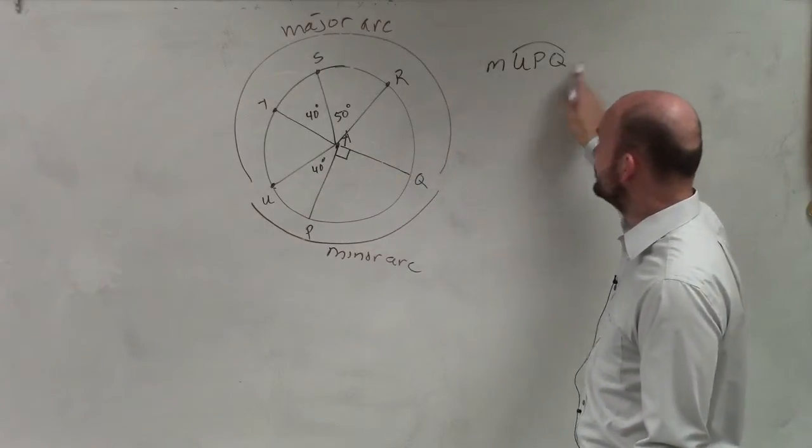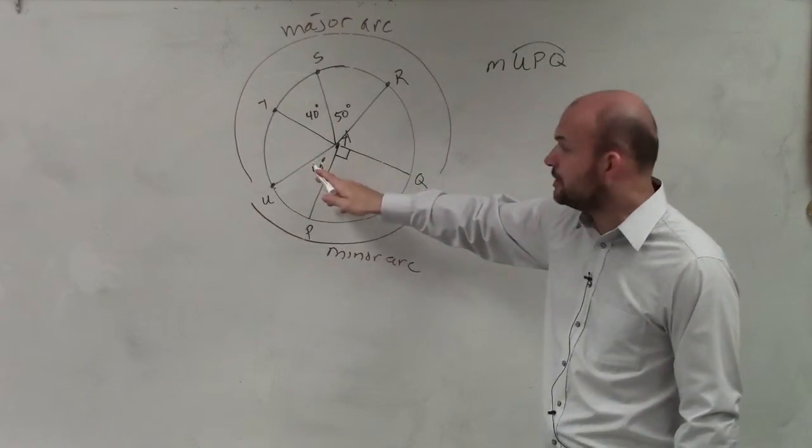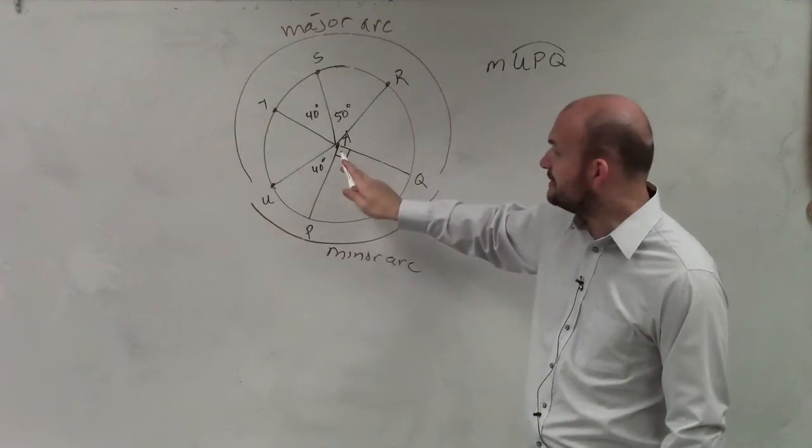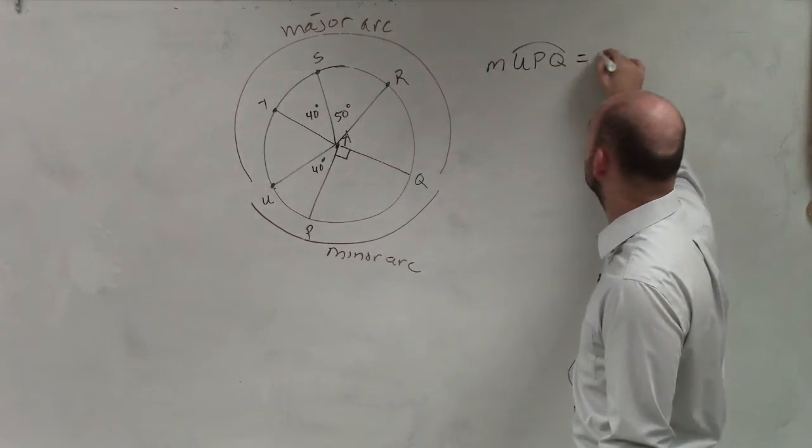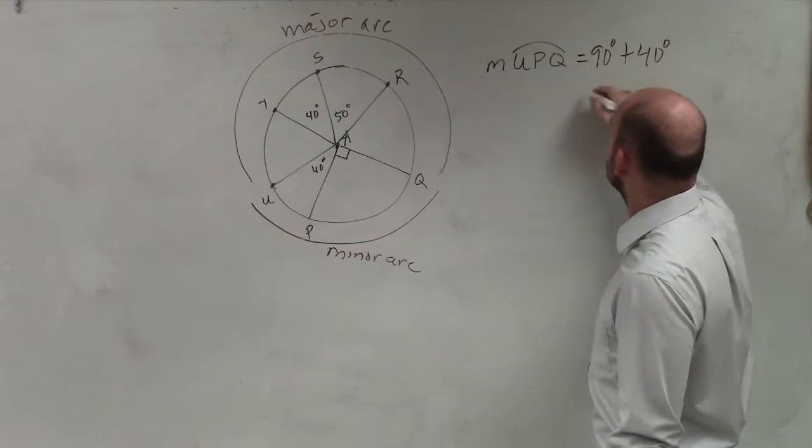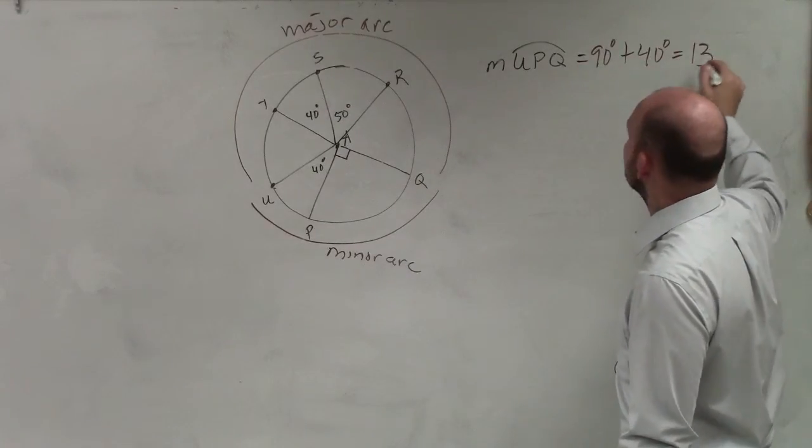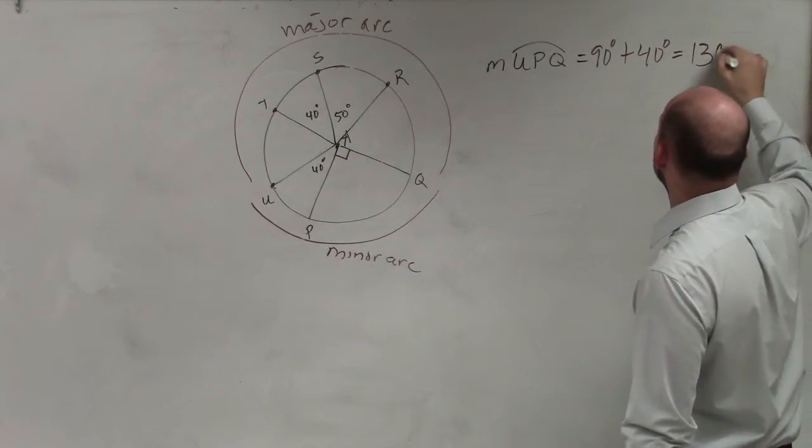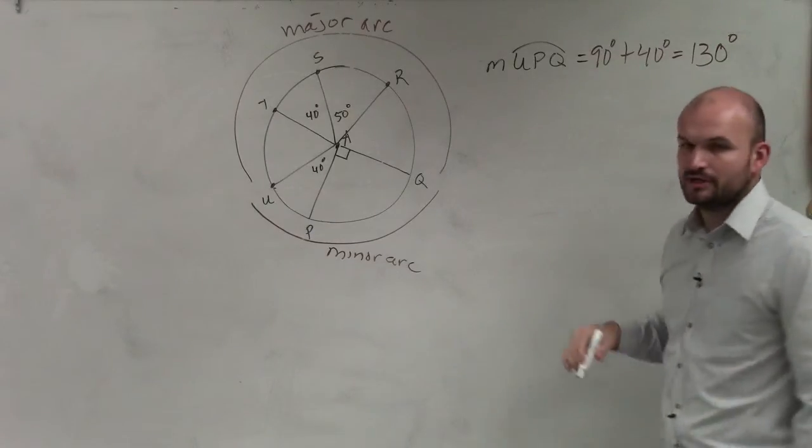So to find the measure of my arc, u, p, q, I need to find the angle of all of this, which is going to be 90 plus 40. So therefore, you can say the measure of u, p, q is equal to 130 degrees.